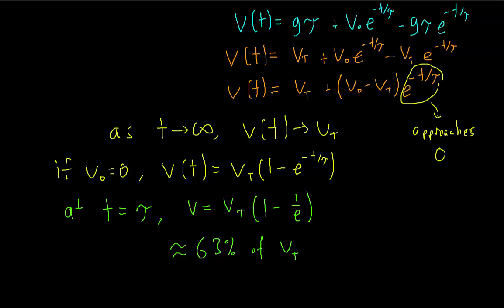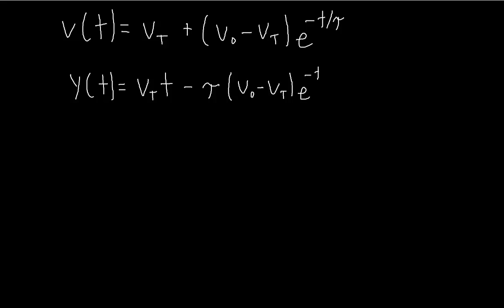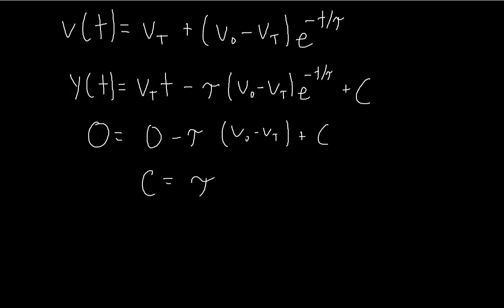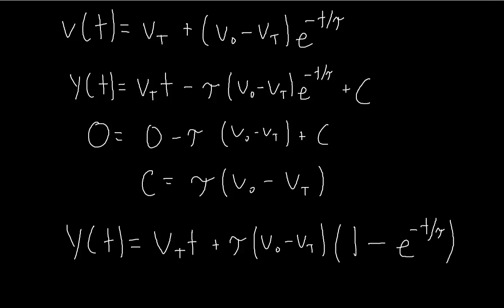Finally, we find the position function by integrating the velocity function. The terminal velocity term integrates to v_t times t, and for the second term we use a u-substitution where u equals negative t over τ, then add a constant c. Setting t equal to 0 with initial position equal to 0 solves for c. After factoring, we have the final equation for the position of an object in free fall with linear air resistance.